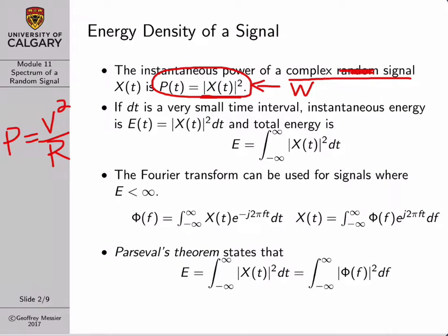If we want energy, we need to multiply power by time. Let dt be an infinitesimally small time step with units of seconds. The instantaneous energy e is equal to instantaneous power multiplied by this very small time step. The total energy of the signal is just the integral of the instantaneous energy from minus infinity to positive infinity. If this total energy is less than infinity, we're dealing with a finite energy signal; otherwise, we're dealing with an infinite energy signal.